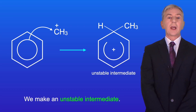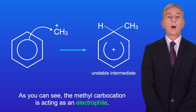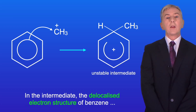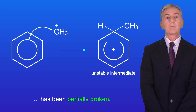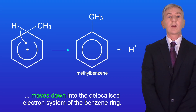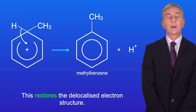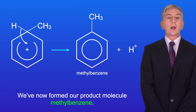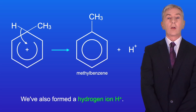We make an unstable intermediate. As you can see, the methyl carbocation is acting as an electrophile. In the intermediate the delocalized electron structure of benzene has been partially broken. So now the electron pair between the hydrogen and carbon atom moves down into the delocalized electron system of the benzene ring, and this restores the delocalized electron structure. We've now formed our product molecule methylbenzene, and we've also formed a hydrogen ion H+.